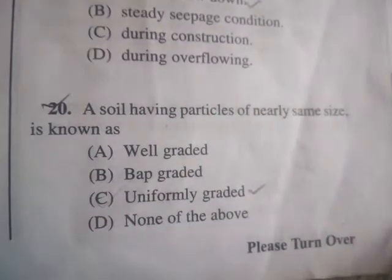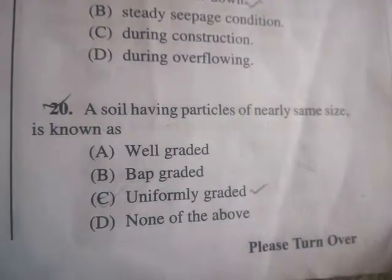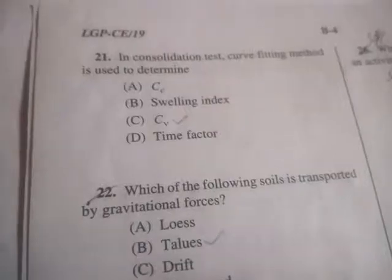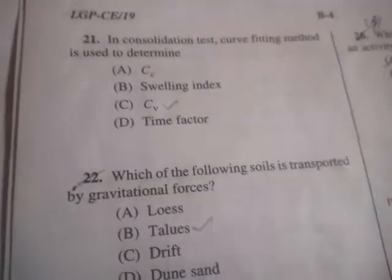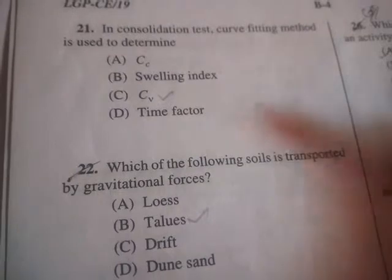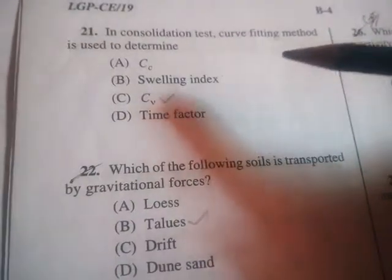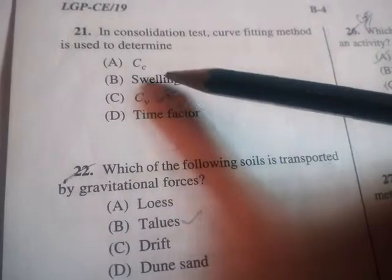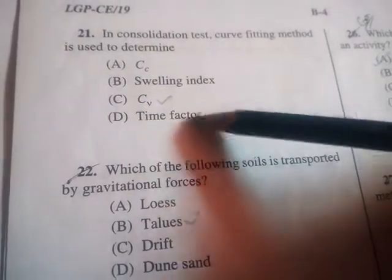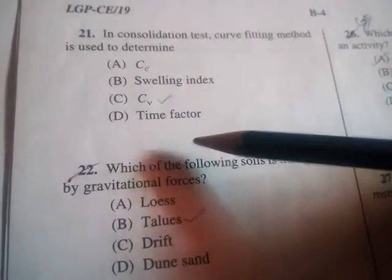Next question: a soil having particles of nearly the same size is known as — well graded, gap graded, uniformly graded, or none of these? The correct answer is C: uniformly graded.